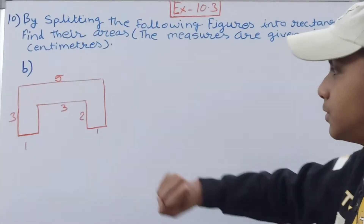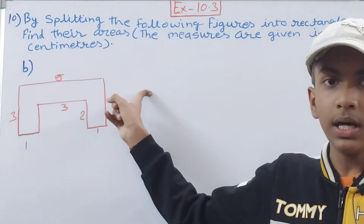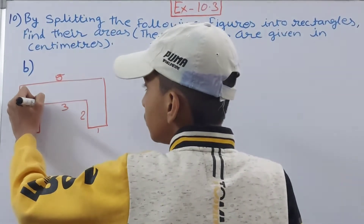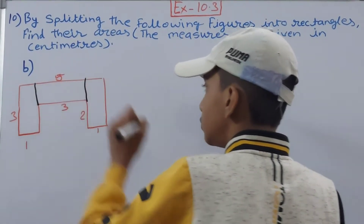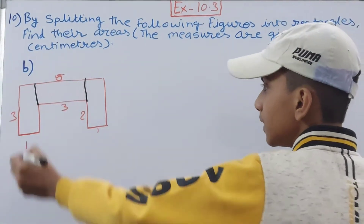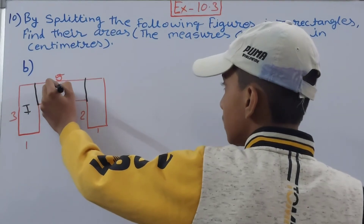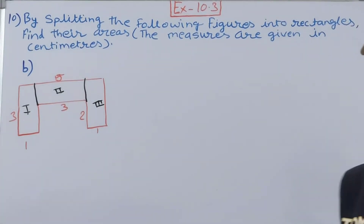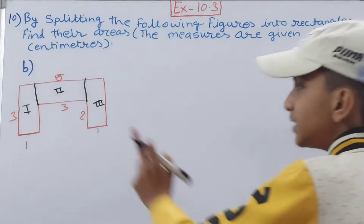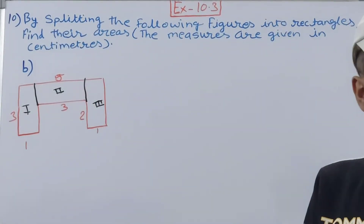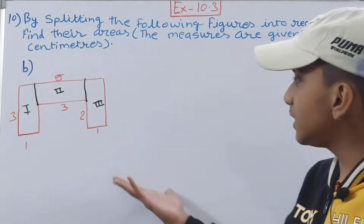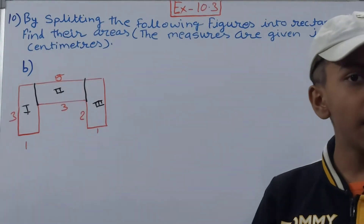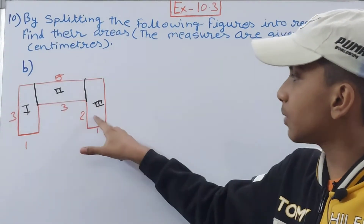For the next figure, we can make three rectangles out of it. From here to here is one rectangle, from here to here is two, and the third one is also here. So we have made three rectangles. Looking at them, this rectangle and this rectangle appear identical — they have the same dimensions — so we can find the area of one and use that for both.